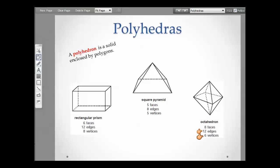An octahedron has eight faces, twelve edges, and six vertices. And if you look, an octahedron is just two square pyramids put together.